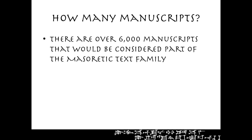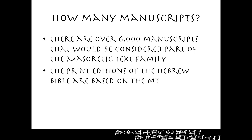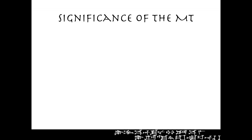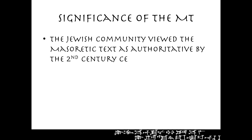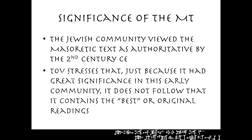How many manuscripts are there? Well, over 6,000 would be considered part of the Masoretic Text family. The print editions of the Hebrew Bible are based on the MT. As for the significance of the MT — the Jewish community viewed it as authoritative by the 2nd century CE. But Tov stresses that just because the MT had great significance in this early community, it does not follow that it contains the best or original readings. The Septuagint, the Syriac Peshitta, the Latin Vulgate, and other sources may contain better readings. You can't say that because the Masoretic textual tradition was authoritative to the early Jewish community, it necessarily contains the original or best readings.